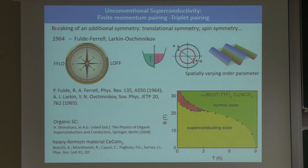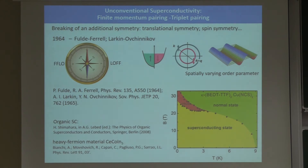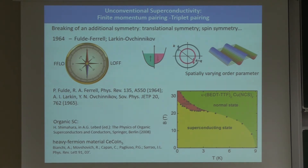The first type is known as FFLO, after the four authors that conceived this mechanism: Fulde-Ferrell, Larkin-Ovchinnikov. We know that superconductivity relies on the condensation of electron pairs. These pairs have opposite spin and opposite momentum so that the pair wave function is isotropic in space — no net momentum, isotropic in spin angular momentum space, and translation invariant. That's what I would call conventional superconductivity. Most BCS-type conventional superconductors have this kind of pairing.